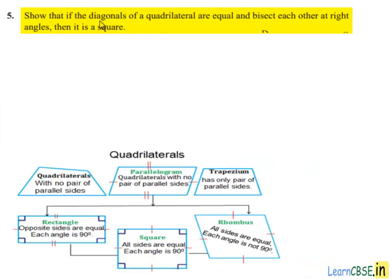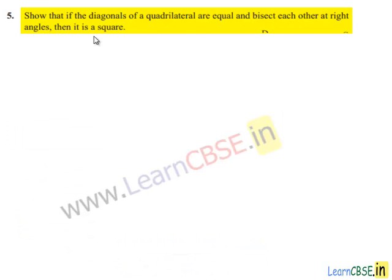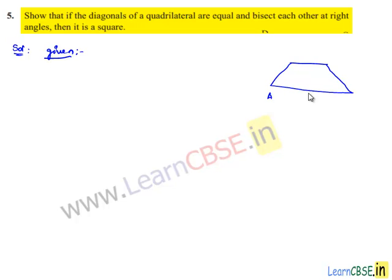Moving on to the fifth question: show that if diagonals of a quadrilateral are equal and bisect each other at right angles, then it is a square. Moving on to the solution, let us note down the given information. It is given that diagonals of a quadrilateral are equal and bisect each other at right angles. So let us consider a quadrilateral ABCD in which the diagonals BD and AC intersect at O.